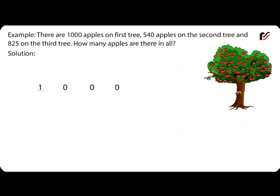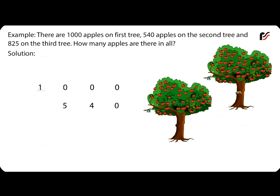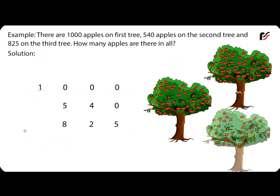Example: There are 1,000 apples on first tree, 540 apples on the second tree, and 825 on the third tree. How many apples are there in all? Apples on the third tree is equal to plus 825. Total apples is equal to 2,365.